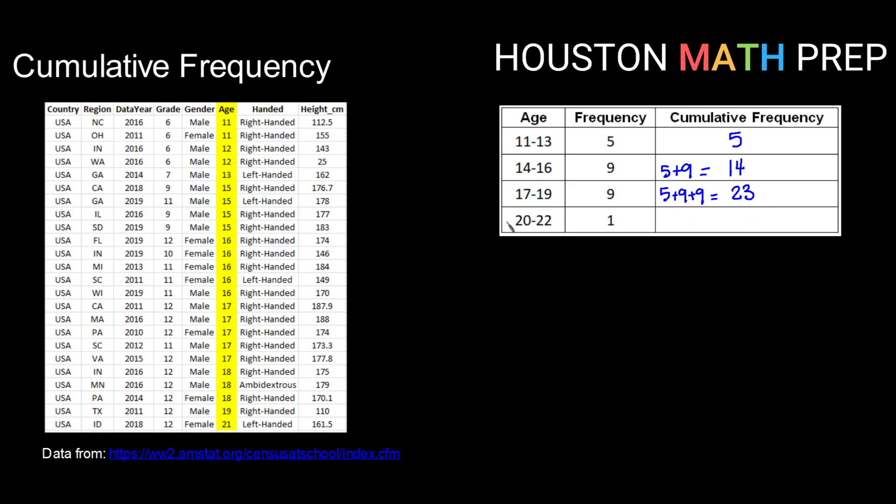And then finally, our last class, how many data values fall between 11 and 22. Notice when you get to the last class, you might be thinking, well, all of them, right? Exactly.